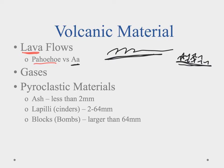Volcanoes also release a bunch of gases, which is thought to have formed most of the early atmospheres. Things like carbon dioxide, water vapor, and steam are among the volcanic gases that come out.